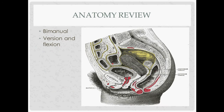In the anatomy review, the peritoneum comes over the uterus and reflects up onto the bladder, forming the vesicouterine fold. Posteriorly, there is the cul-de-sac, or pouch of Douglas. The bladder is anterior, the rectum is posterior, and the vaginal opening connects to the cervix and uterus at roughly a 90-degree angle.